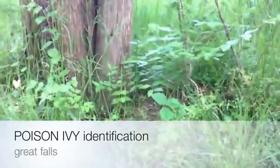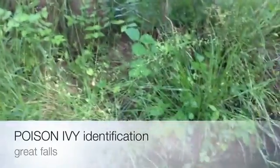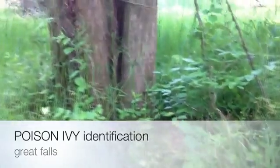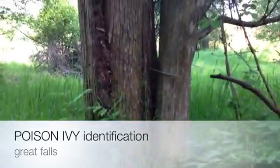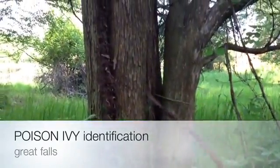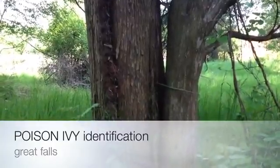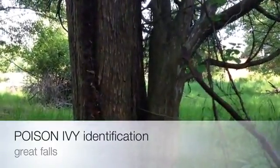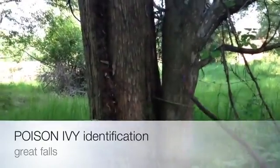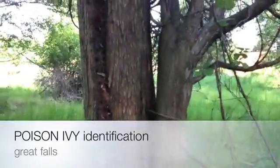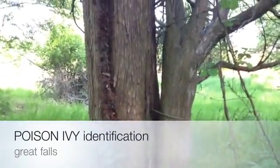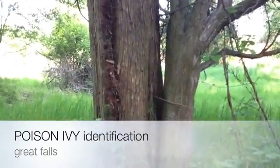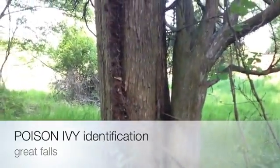And then the root. Where are the poison ivy roots? You saw one on a tree too, right? And then there's another one right here. Some people say that looks like a monkey tail — the root on the tree. You can always look very quickly at trees and see if there's a hairy root growing up the tree.